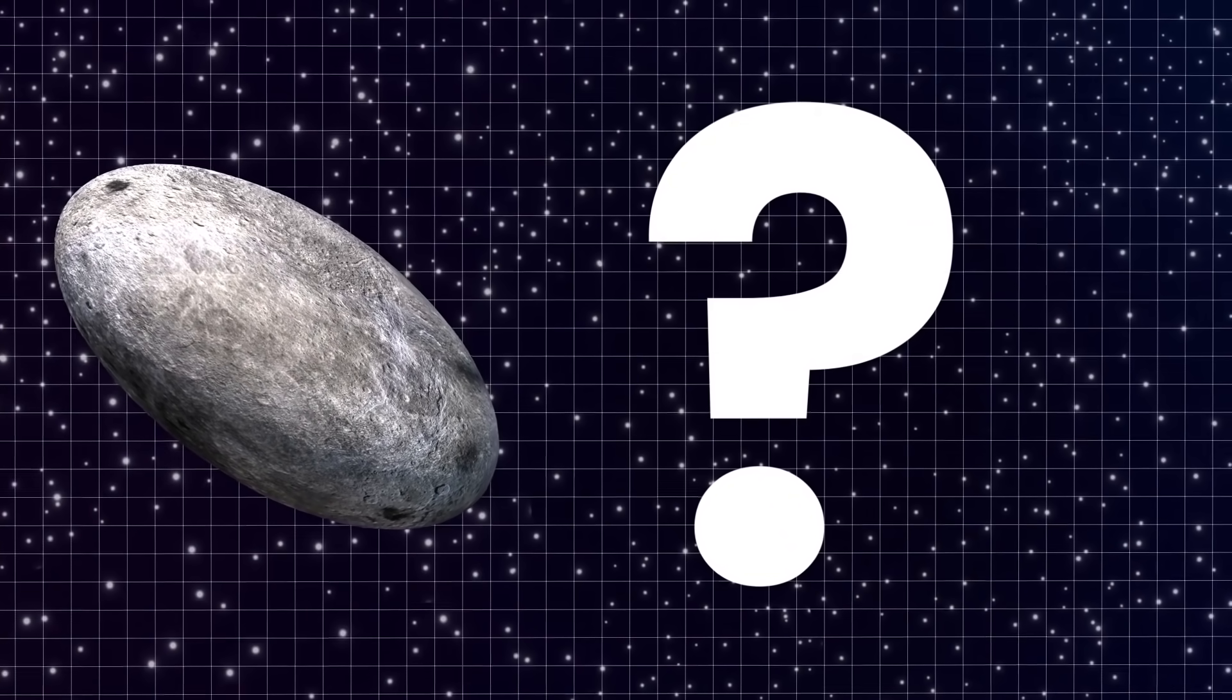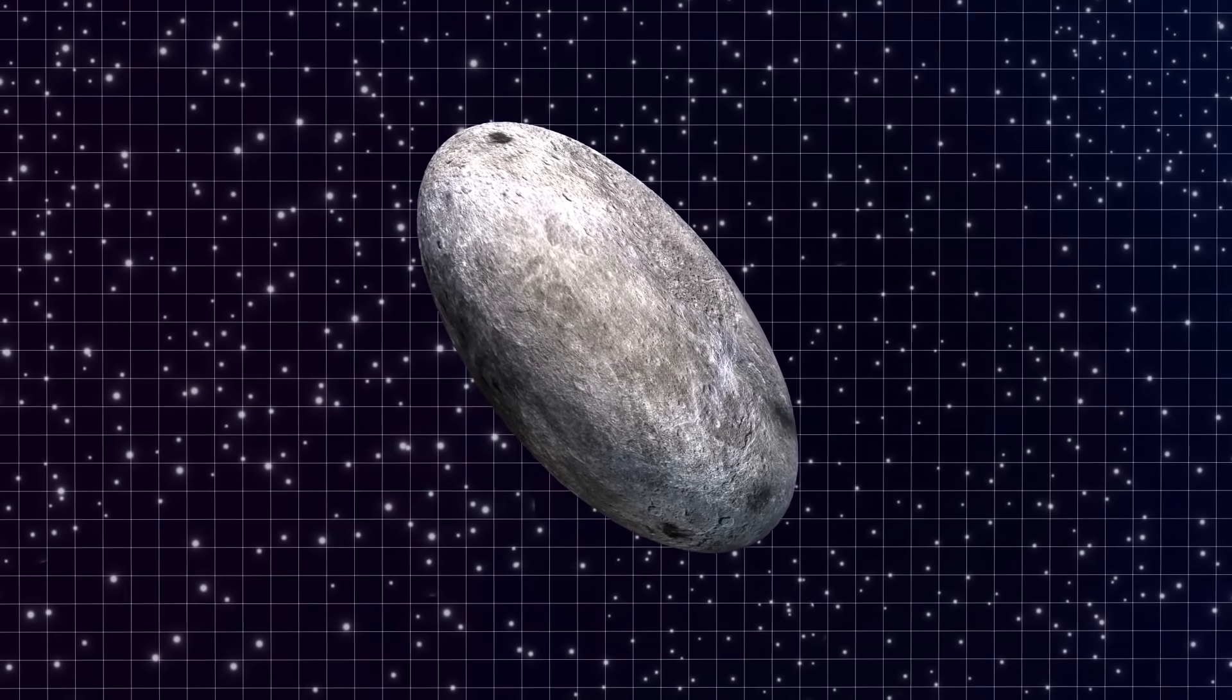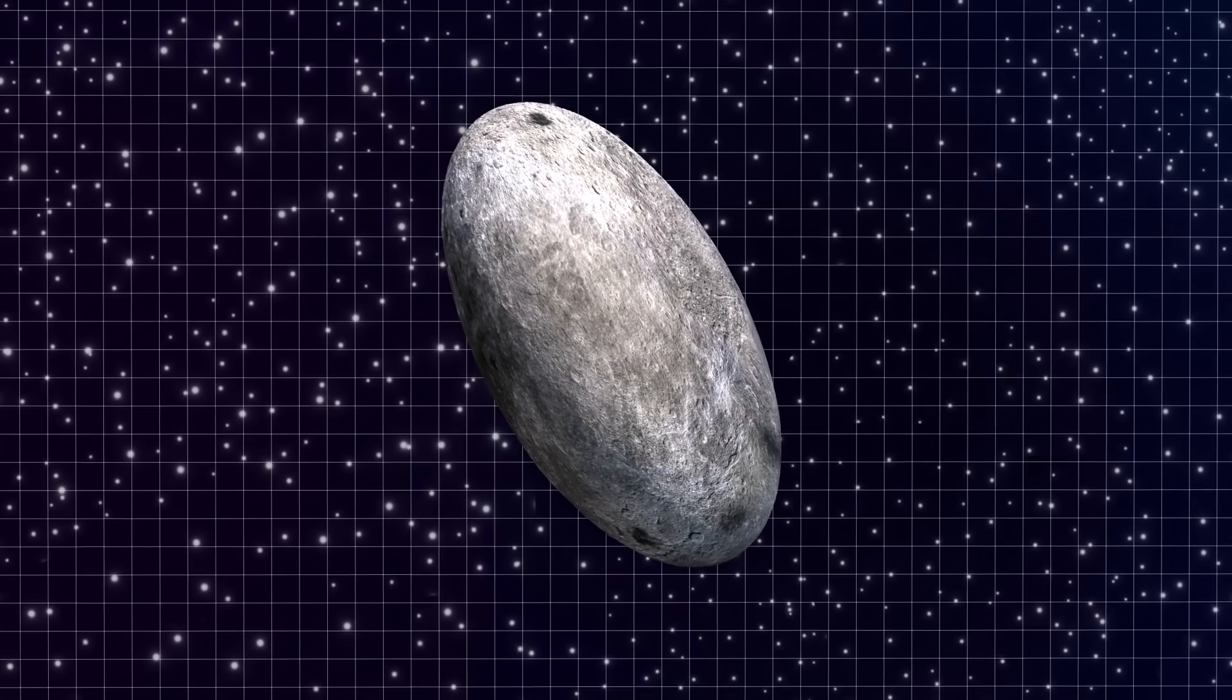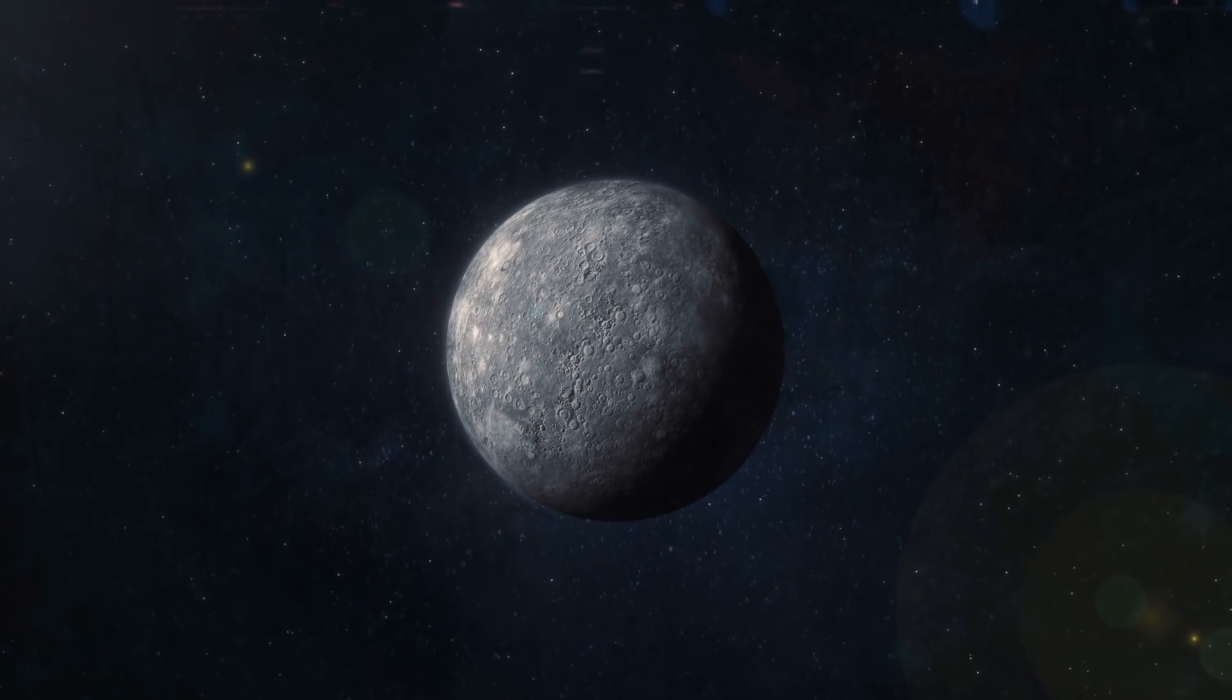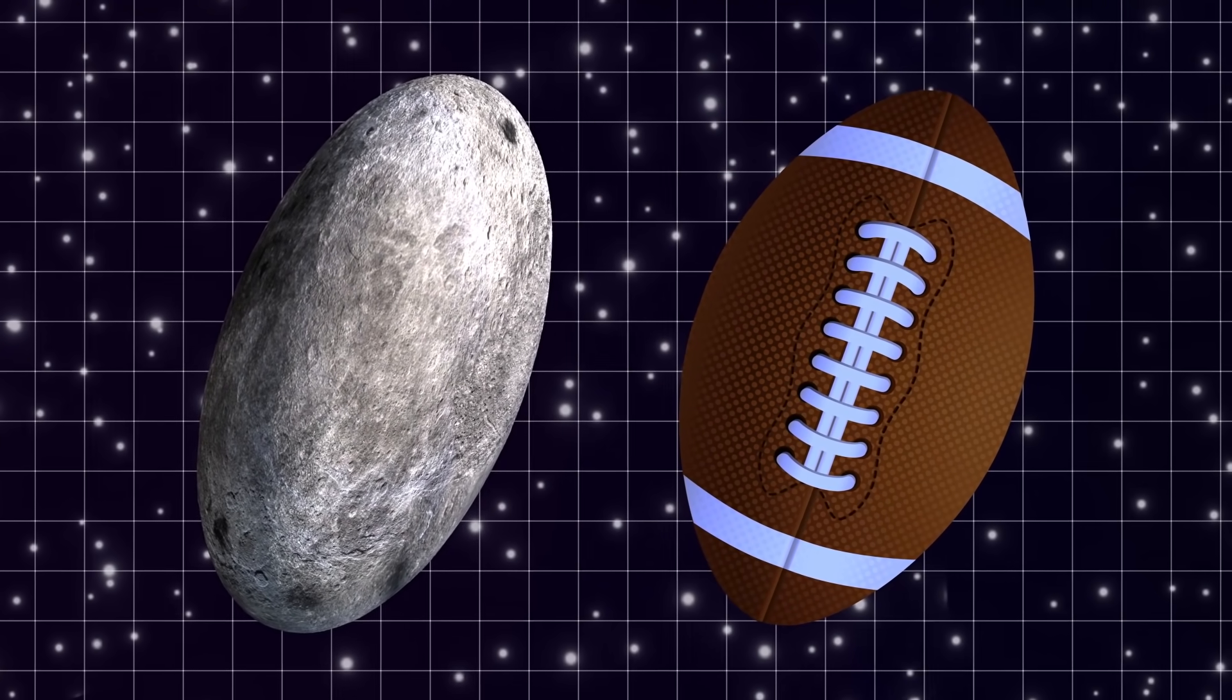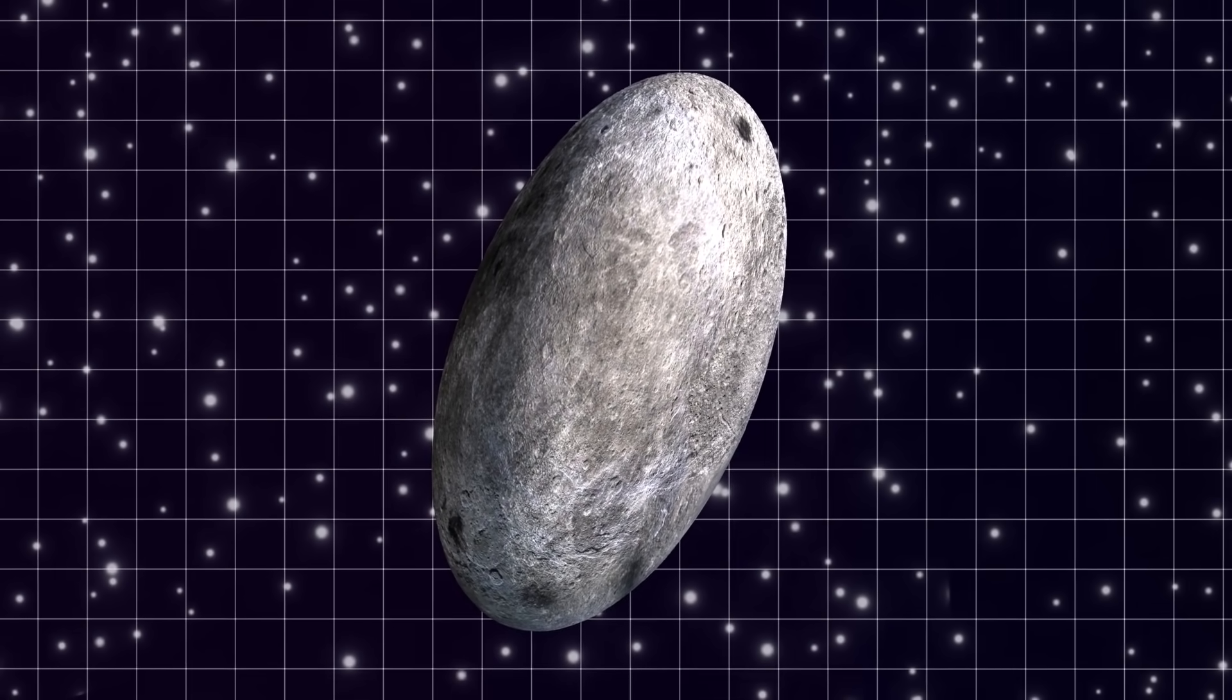Well, a day in Haumea lasts only four Earth hours, making it the fastest rotating large object of our solar system. Actually, it's rotating so fast that scientists argue that probably this is one of the reasons for Haumea's weird shape. This planet is not spherical, as you would expect any planet that respects itself to be, but instead looks a bit more like a football, since it's more or less twice as long in one direction as it is in the other.